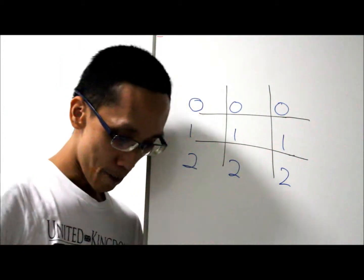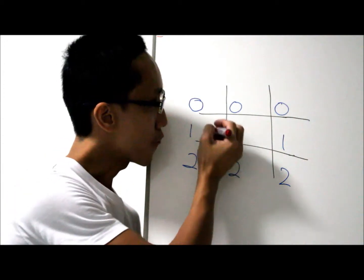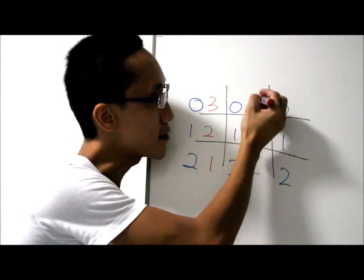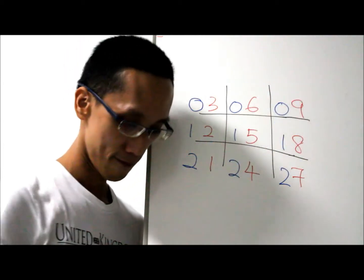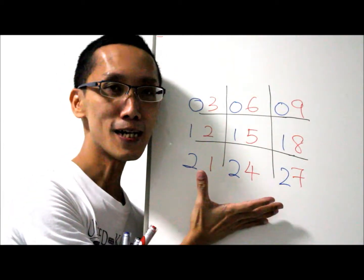After that, look at the pattern: 1, 2, 3, 4, 5, 6, 7, 8, 9. That's your 3 times table. Simple? Let's see.